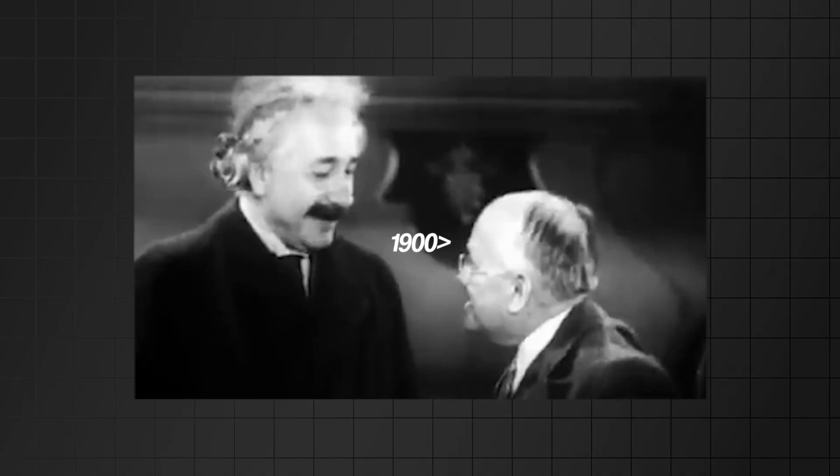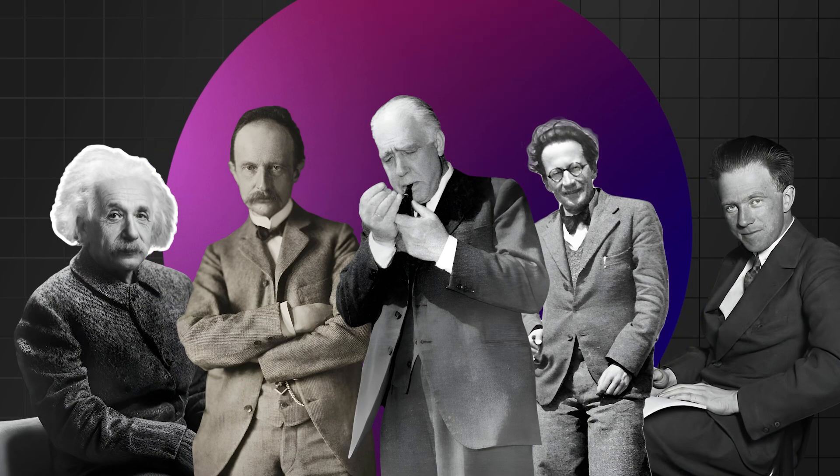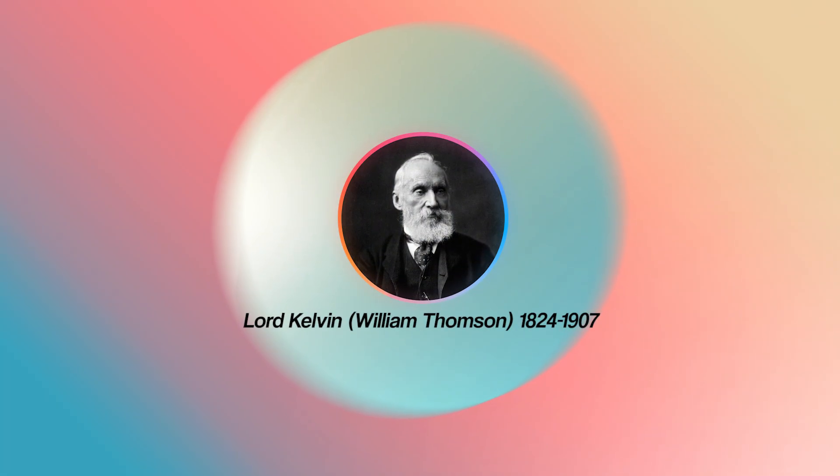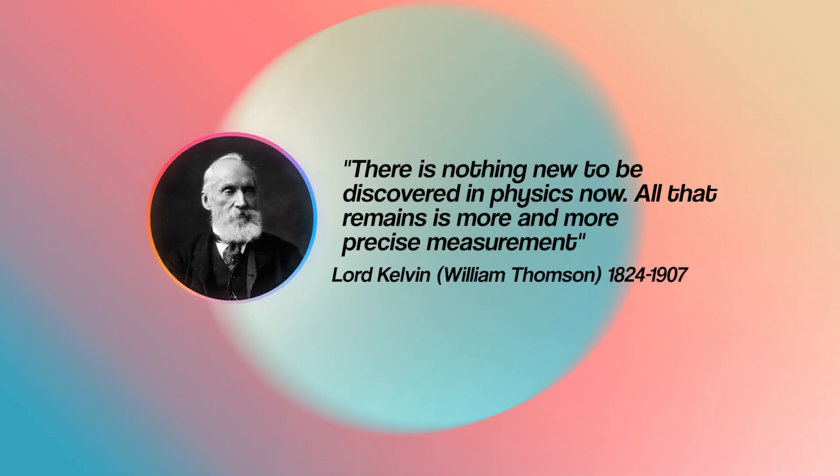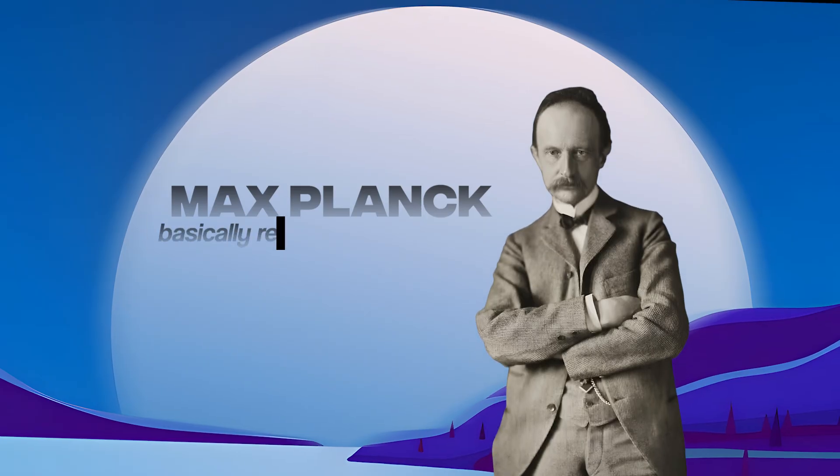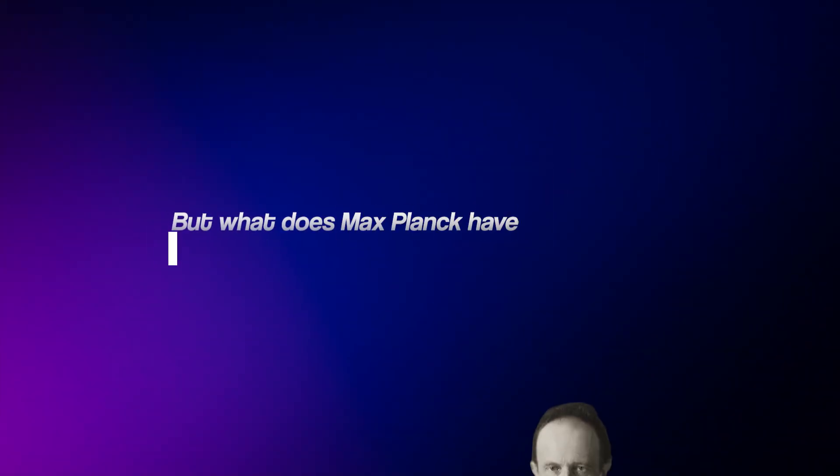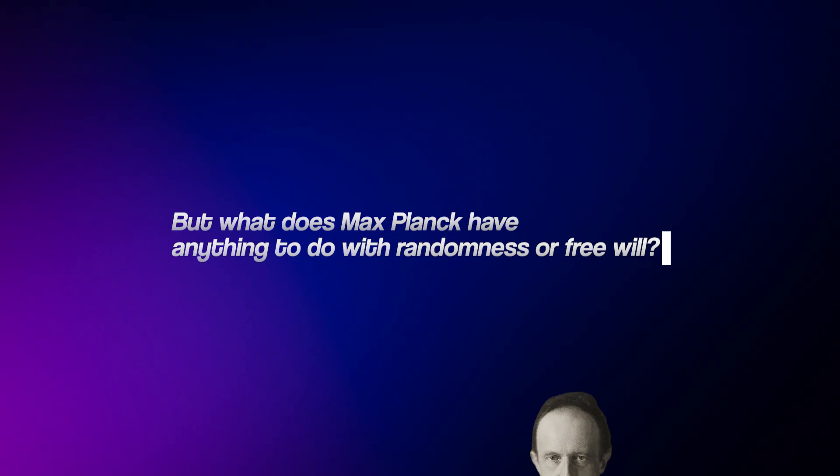This one's self-explanatory, but I have to give you context first. Before the year 1900, physicists around the world thought that the universe was solved. Just a few tiny problems here and there. One physicist even went as far as to say there is nothing new to be discovered in physics now. Then came the year 1900 and a man named Max Planck basically revolutionized physics. He discovered a little something that would later be called quantum physics. But what does Max Planck have anything to do with randomness or free will? Oh, everything.